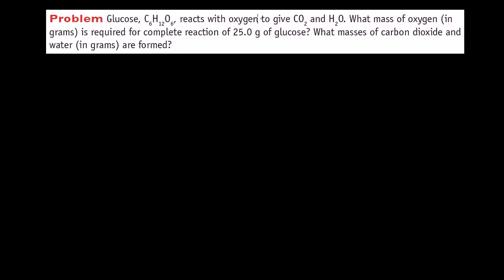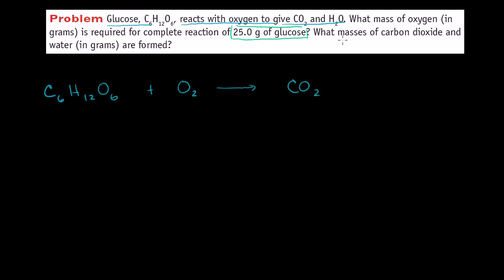We're told that glucose reacts with oxygen to give carbon dioxide and water. What mass of oxygen in grams is required to complete the reaction of 25 grams of glucose? They also want to know what masses of carbon dioxide and water are formed. So let's first write the reaction: glucose C6H12O6 reacts with molecular oxygen O2 to give carbon dioxide and water.